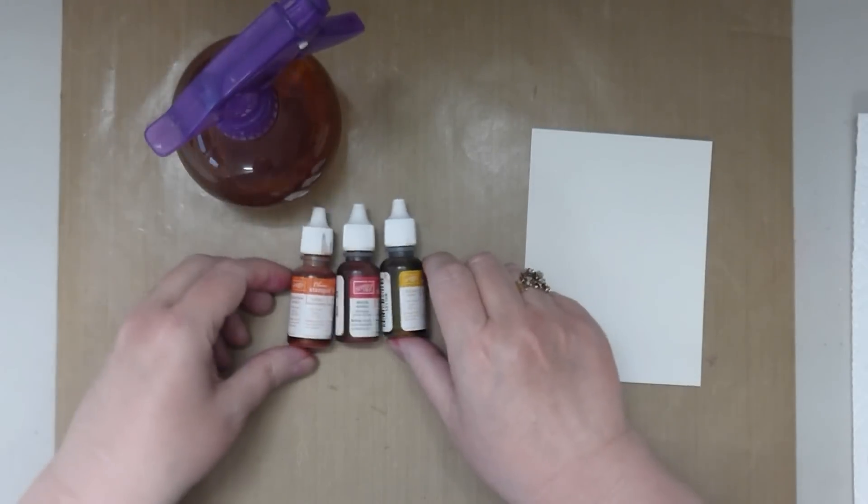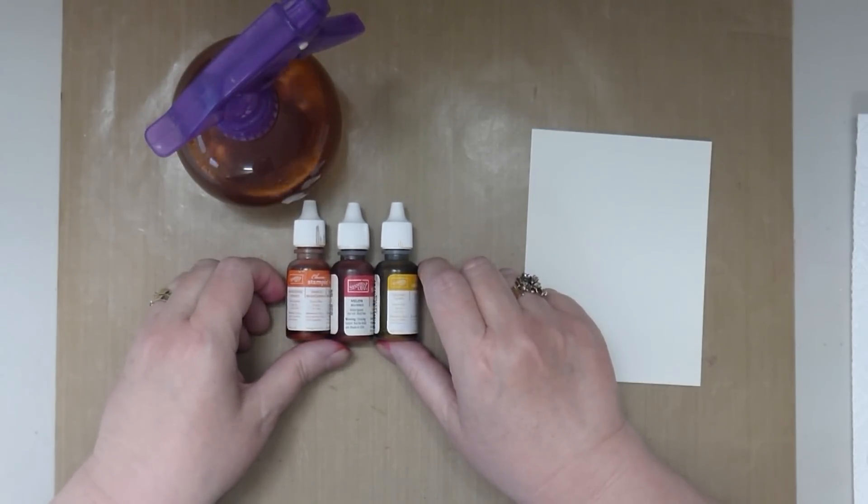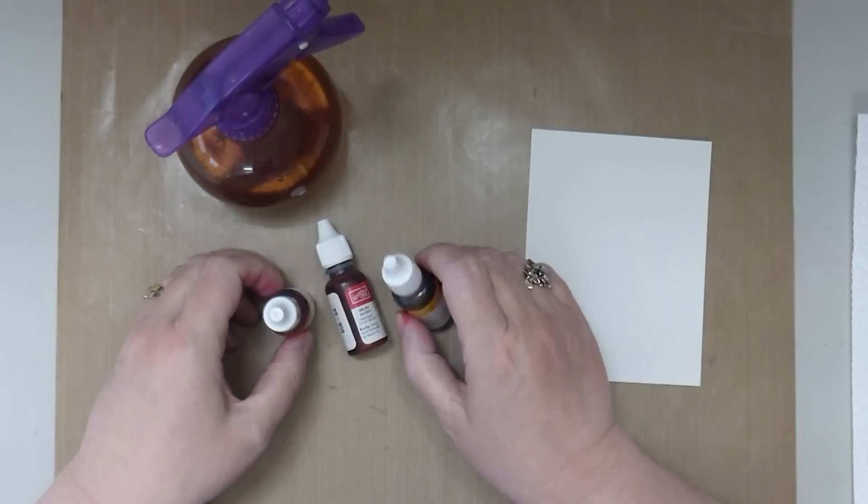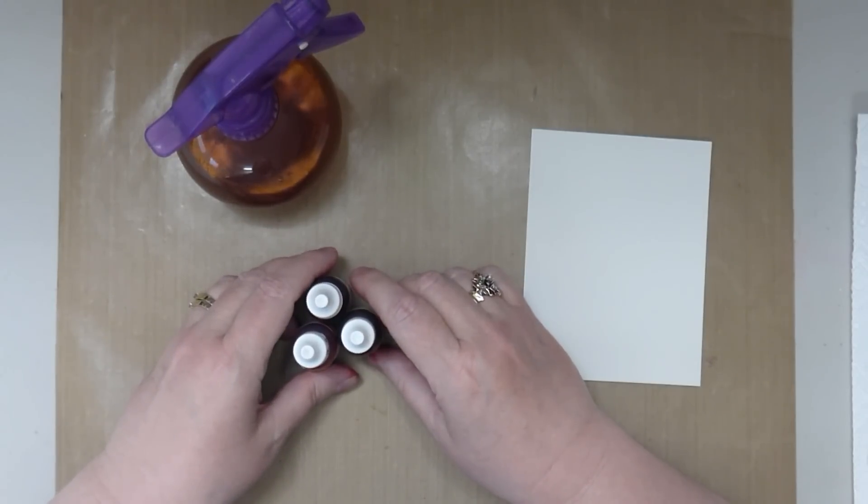I'm using three re-inkers from Stampin' Up today. Two or three colors are the best. More than that, it would get a little muddy with the colors. So I'm using Tangerine Tango, Melon Mambo, and Crushed Curry today. These three colors are basically in the same family of colors and they work well together and blend together well.